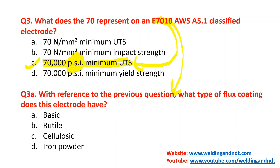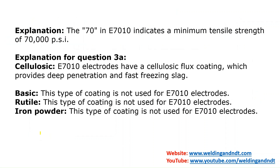Question 3A asks: what is the electrode covering or flux coating of E7010? The last two digits of the electrode number show the flux covering. '10' represents high cellulose sodium — meaning it is a cellulosic electrode. '11' would represent high cellulose potassium.